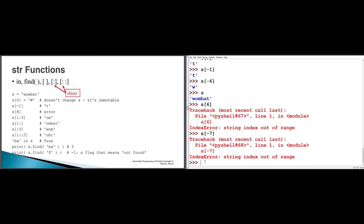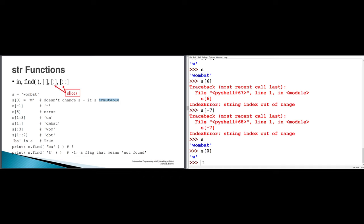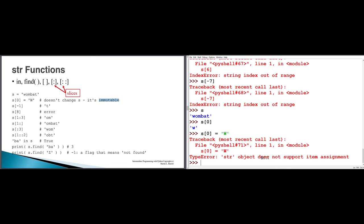The str data type has several operators and functions you can apply. A string is immutable — it's not allowed to change. So if I tried to say s[0] gets a capital W, for the str data type this is not allowed. 'Does not support item assignment' is a long-winded way of saying that strings are an immutable data type.